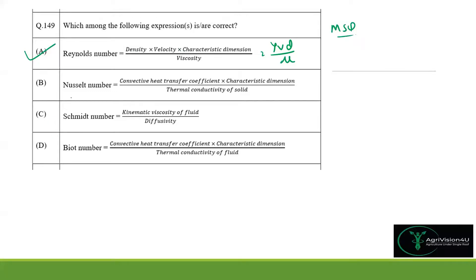Option B: Nusselt number is equal to convective heat transfer coefficient H times characteristic dimension D divided by thermal conductivity of solid — that means H·D / K. However, they are writing it is for solids, which is not valid; it is for fluids. Hence option B is wrong.